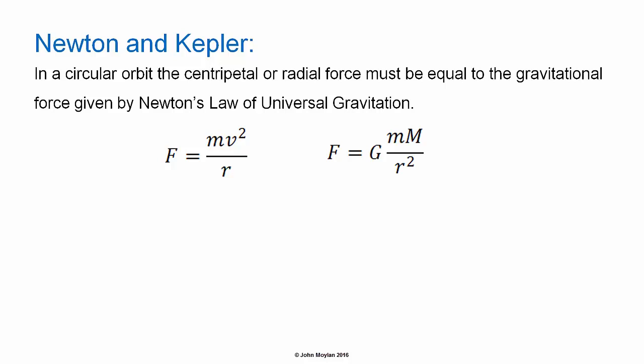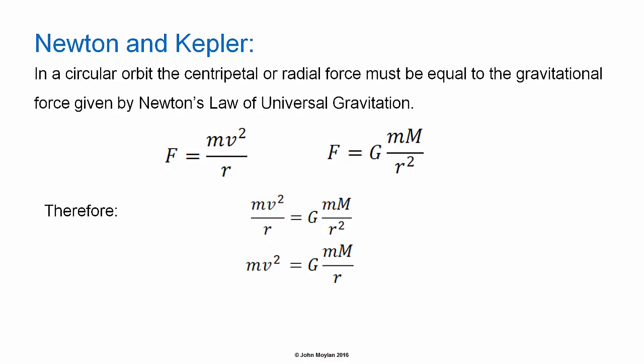Therefore, we can write mv squared on R equals capital G little m big M on R squared. Multiplying both sides by R, we get mv squared equals capital G little m big M on R. Therefore, v squared equals capital G capital M on R.